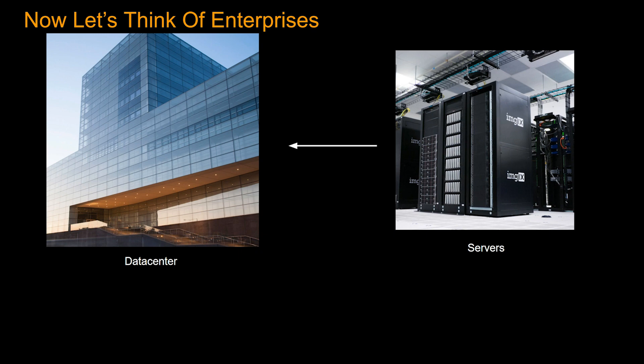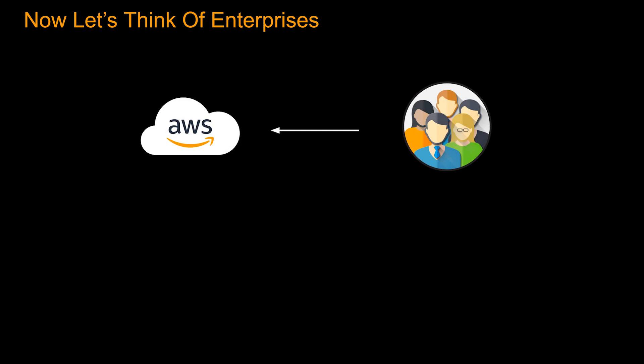The company has to manage the cooling, the electric bill, all the connections to the servers, all the security — everything. So it's a lot of money and overhead. Now the company can move out of the data center, move everything to cloud, and get rid of all those overhead costs.